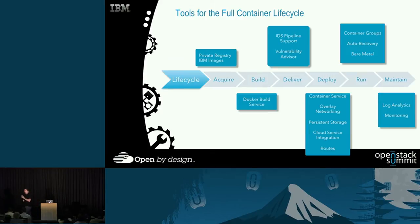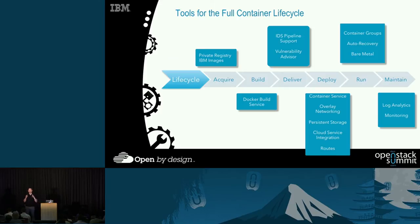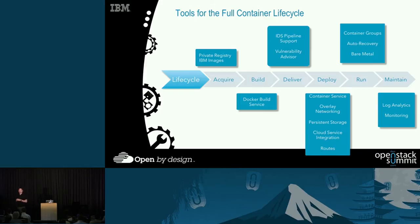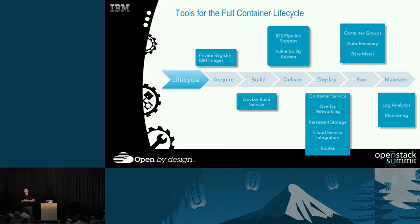Step three is delivery — how do you take that containerized application and deliver it into a running production or test environment? We have a pipeline service that lets you define a repeatable continuous delivery pipeline with automated build, testing, and promotion through test, staging, and production environments in a controlled way. That pipeline understands containers and Docker — it knows how to do builds, publish to Docker registries, and talk to a Docker host or our container service to execute containers on your behalf.